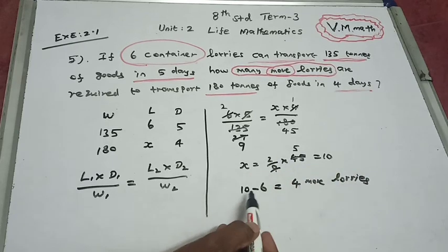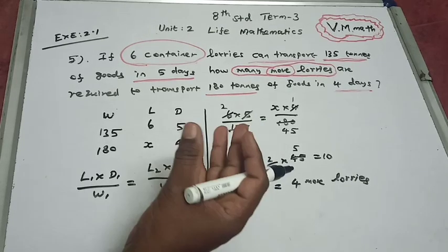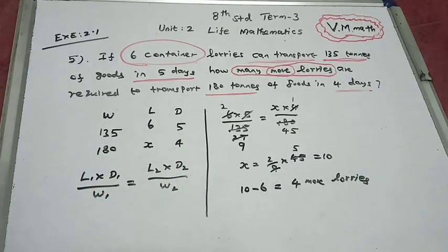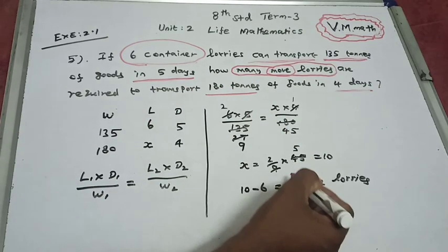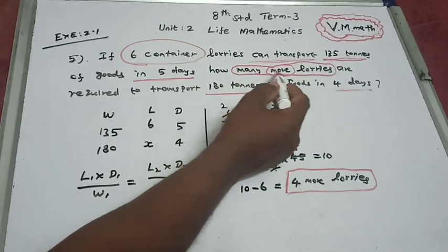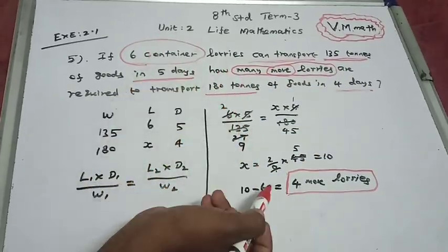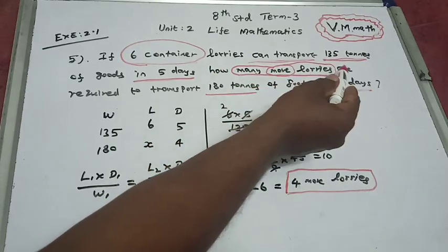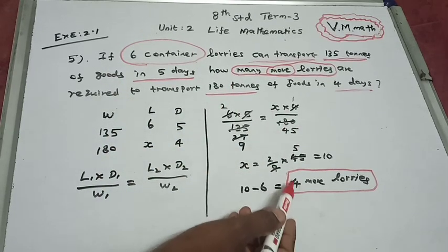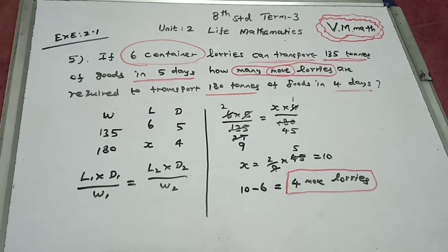To summarize: 6 plus 4 lorries gives a total of 10 lorries to transport 180 tons in 4 days. The question asks how many more lorries are required — since 4 plus 6 is 10, the answer is 4 more lorries required. Thank you.